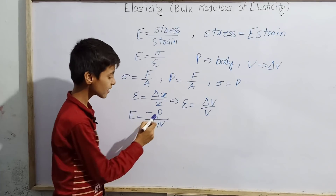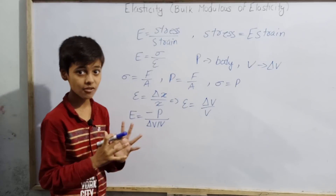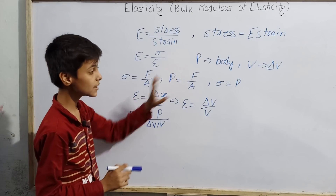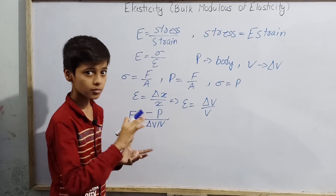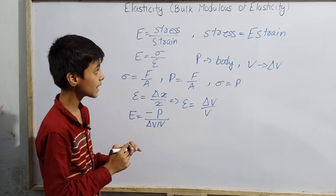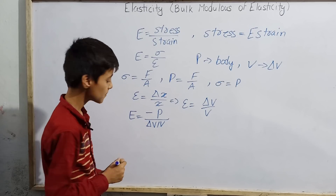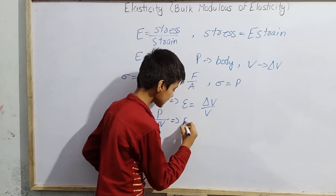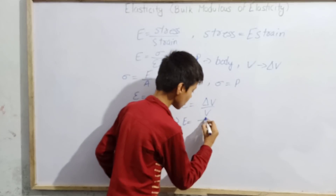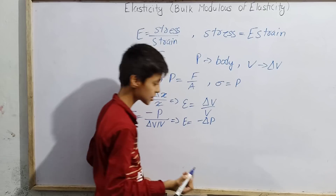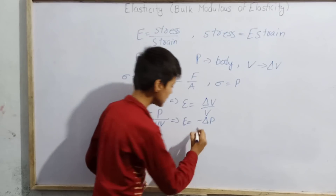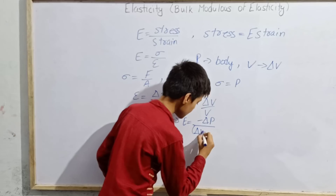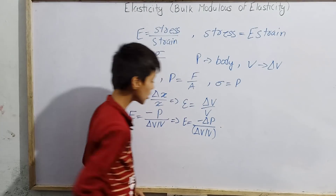So we have E equals minus P divided by (delta V / V). Now, at the place of P, we should put delta P, because here we need to put the change in pressure, not the total or average pressure. So we can write E equals minus delta P divided by (delta V / V).